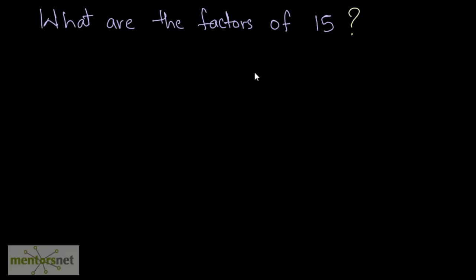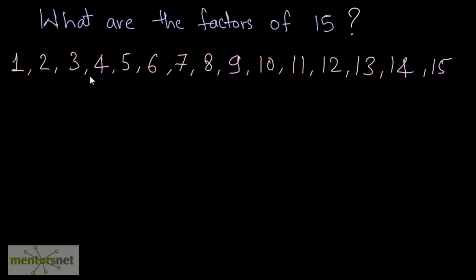The factors of 15 are the numbers which can divide 15. So all those numbers which are less than 15 and can divide the number 15 are the factors of 15. Let us list all the numbers which are less than 15 and find out which of these numbers can divide 15. So, 1 can divide 15, so 1 is a factor of 15.